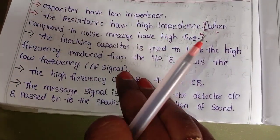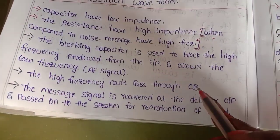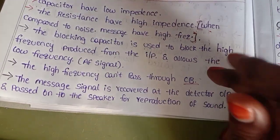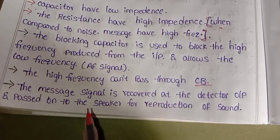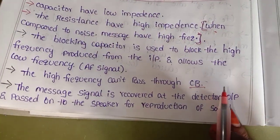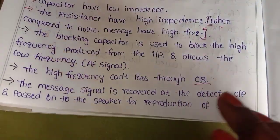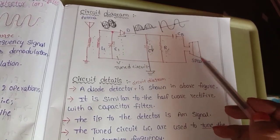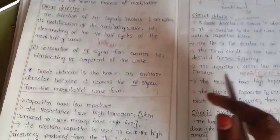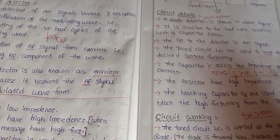The AF signal means audio frequency signal. The high frequency cannot pass through CB — the blocking capacitor. The message signal is recovered at the detector output and passed on to the speaker for reproducing the sound. The audio frequency signal is recovered at the detector and passed to the speaker output. This is the diode detector explanation. If you have any doubts, please ask in the comment section. Thank you for watching.